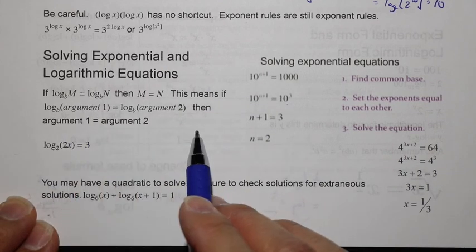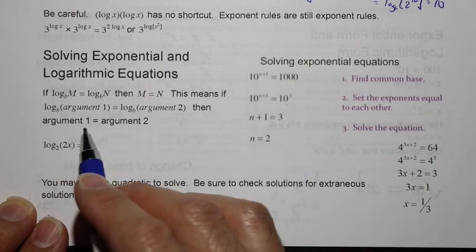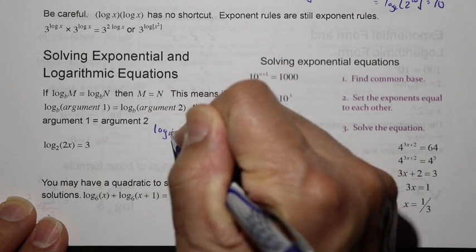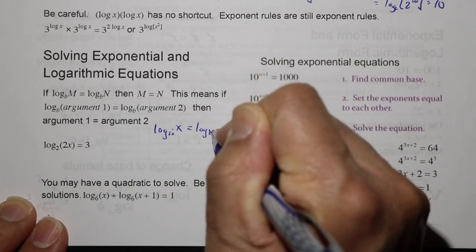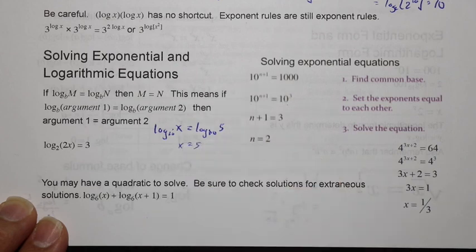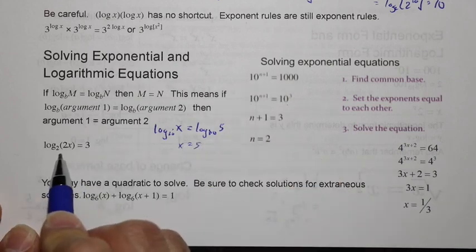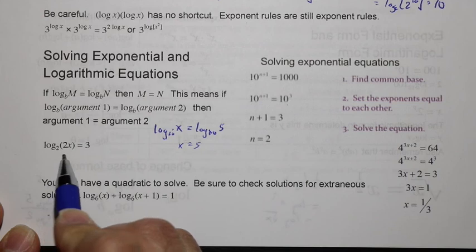Now logs are kind of the same way. If we can find that the log of one thing equals the log of the other thing, then argument 1 will equal argument 2. For example, log base 10 of x, if it equals log base 10 of 5, then we can conclude that x equals 5. In this case, we also have to think about being able to convert between logarithmic form to exponential form.